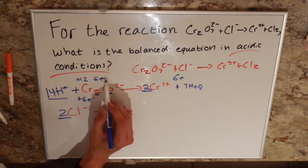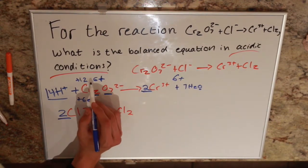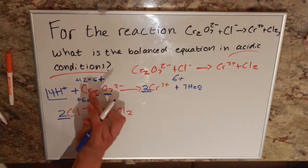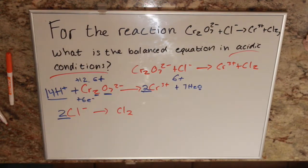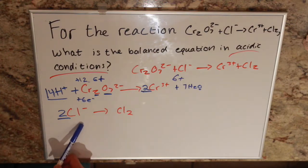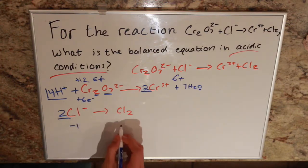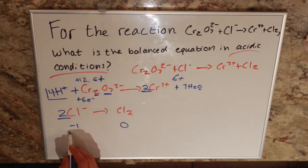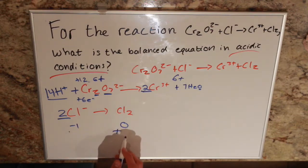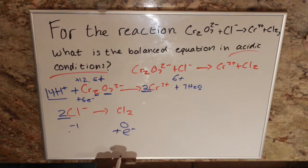And on this one we have total charge of -1, total charge of 0. So we're going to have to add 1 electron to this side and get a -1.